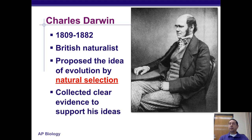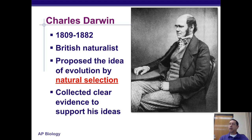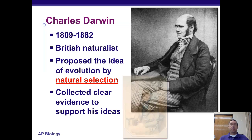Lamarck's explanation — for example, that giraffes had long necks because they were stretching to reach leaves at the top of trees, and that this was somehow passed on to the next generation — had no real scientific evidence to support it. Darwin, on the other hand, had lots of evidence to support his ideas.